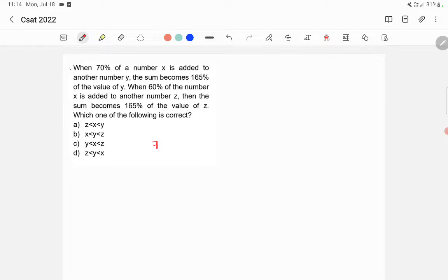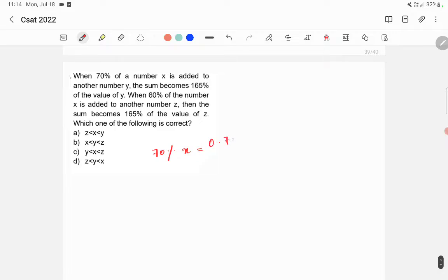70% of x means 0.7x, right? So if 70% of x is added to y, that means 0.7x plus y is equal to the sum becomes 165% of the value of y. 165% means 1.65y.